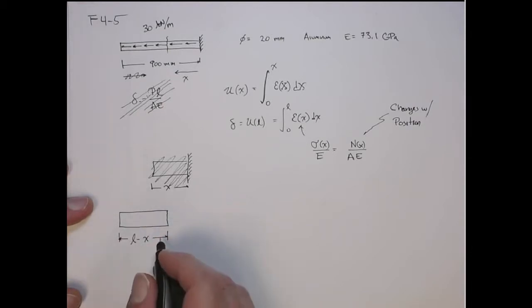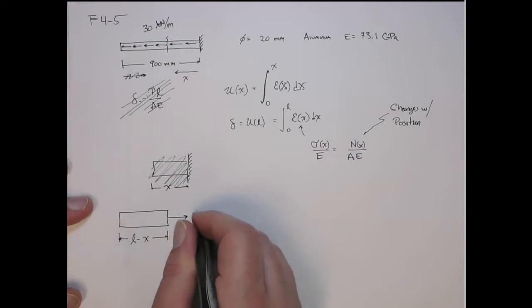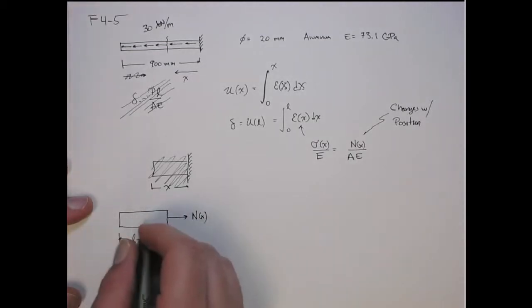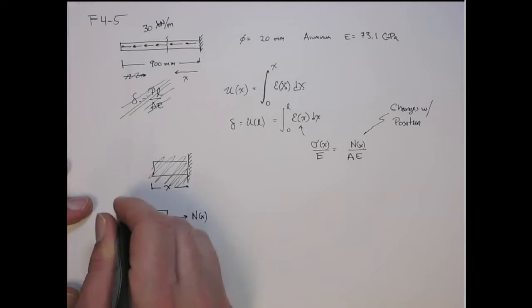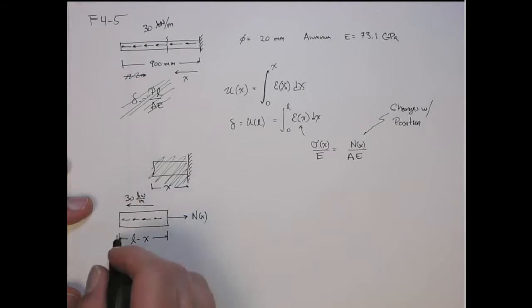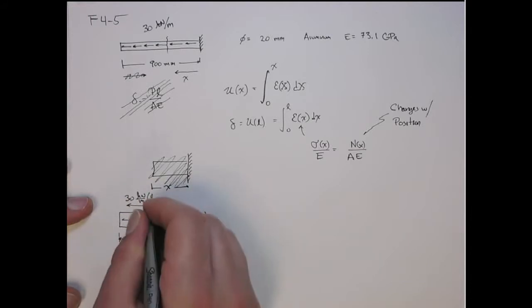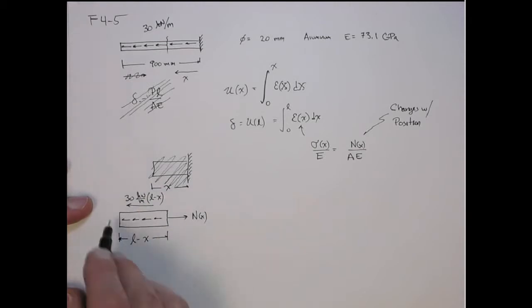I'm just using the left-hand side. Here is the internal reaction force as a function of position, positive tension. And then we have the distributed force acting along this length here. So the total distributed force acting on this is the 30 kilonewtons per meter times the length. In this case, it's acting on this length L minus x.